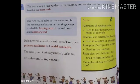Helping verbs or auxiliary verbs are of two types: primary auxiliaries and modal auxiliaries. The three types of primary auxiliary verbs are be verbs — that is am, is, are, was, were.